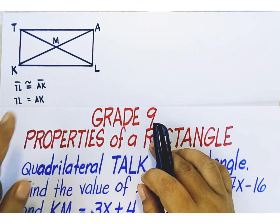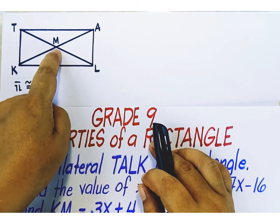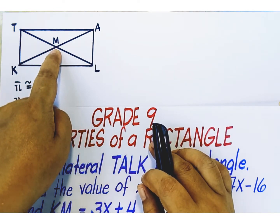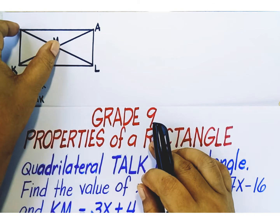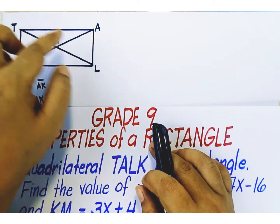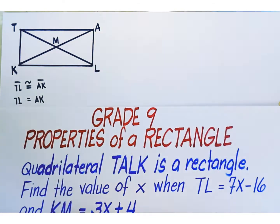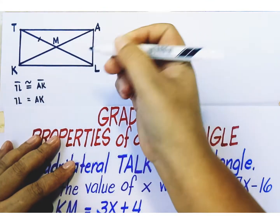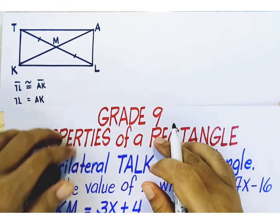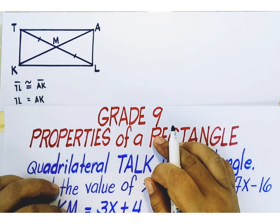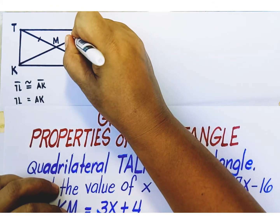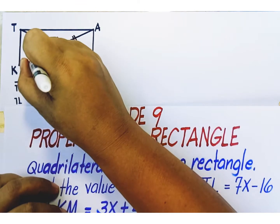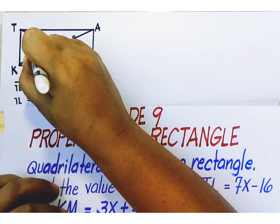And when we say that this is the midpoint of the diagonals, it means that the two shorter segments are equal to each other. Therefore, TM is congruent to LM, AM is congruent to KM.